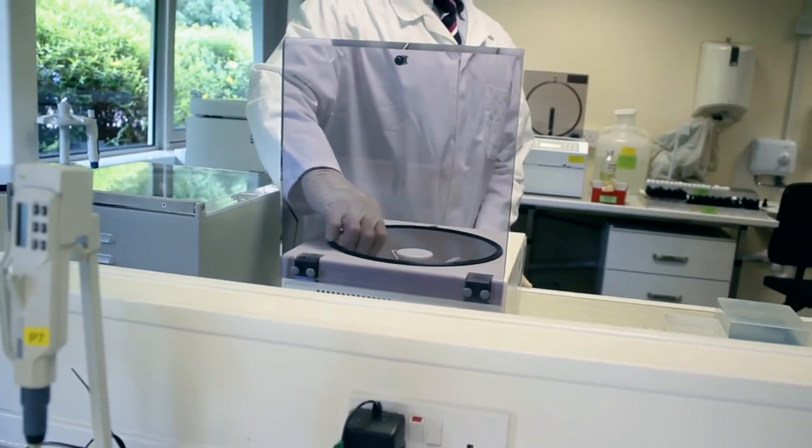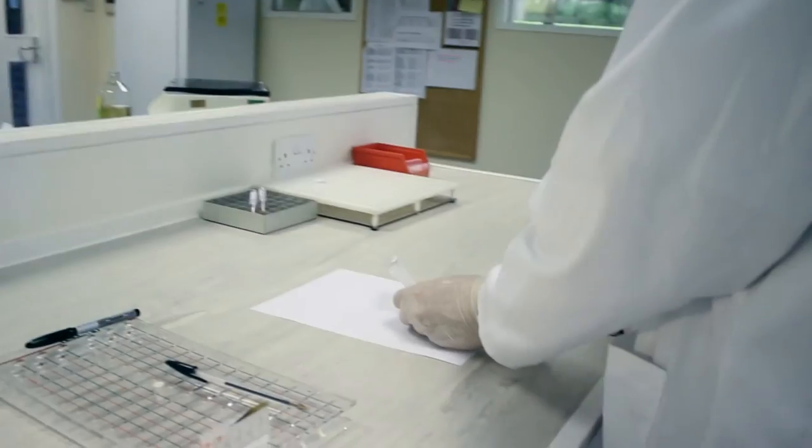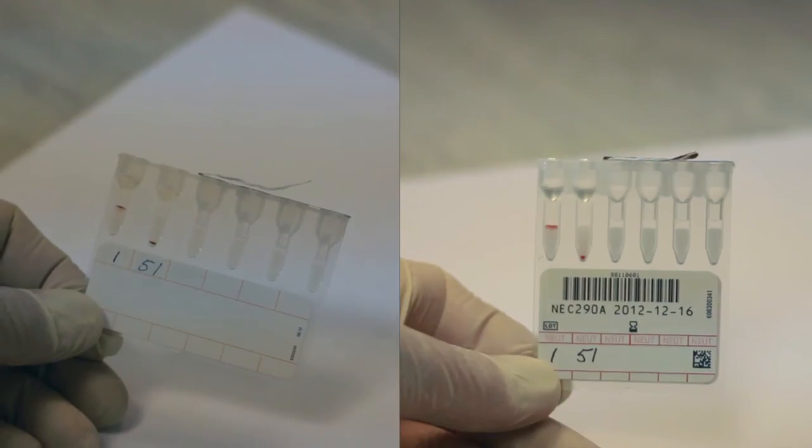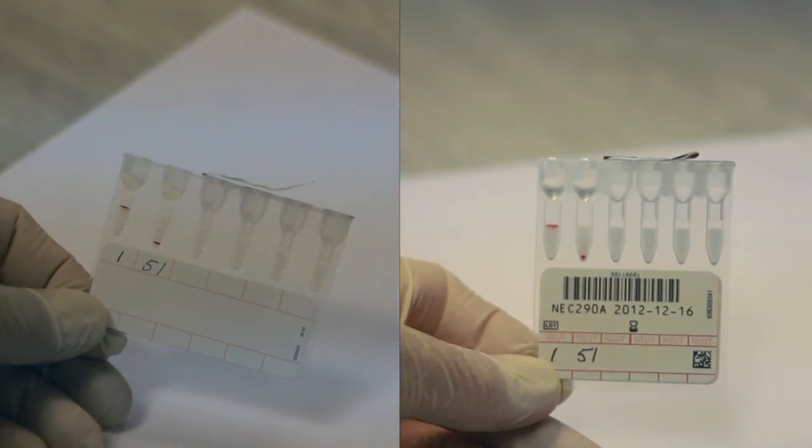Once the card has been centrifuged, the results can be examined. The positive sample can be identified by the thin band of agglutinated cells near the middle of the microtube.